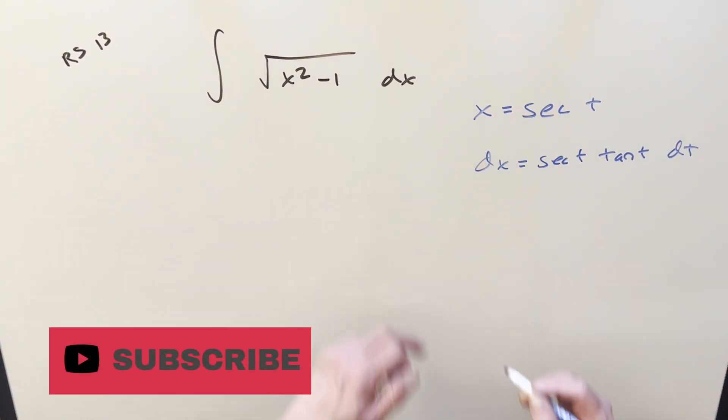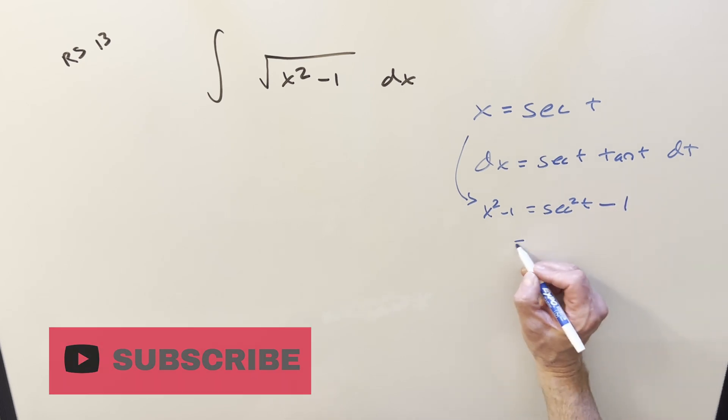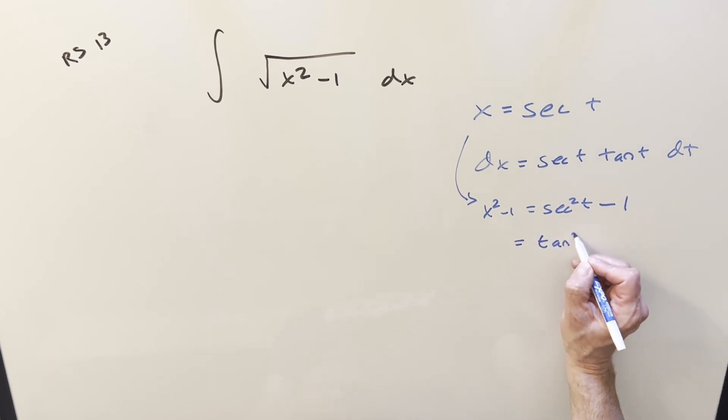The only other thing, for x squared minus 1, come down here. So for x squared minus 1, this is going to be the same thing as secant squared t minus 1, but that's actually the same thing as tan squared t.